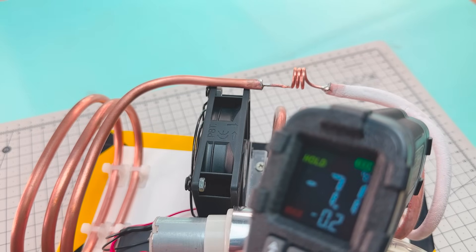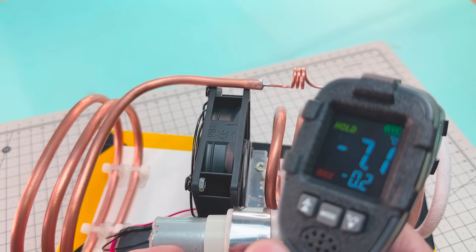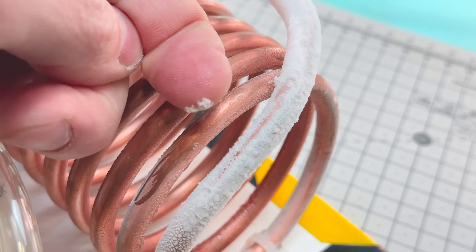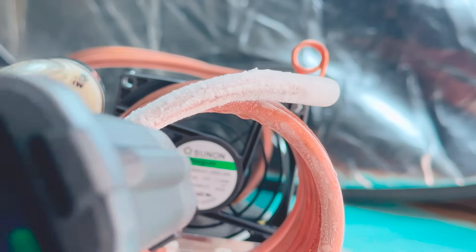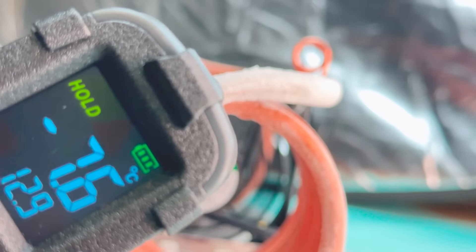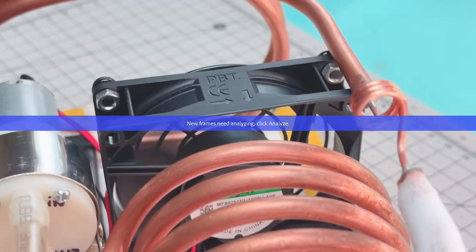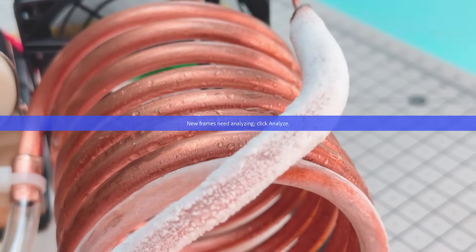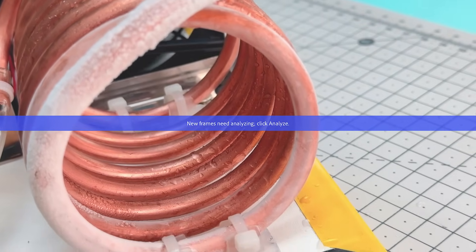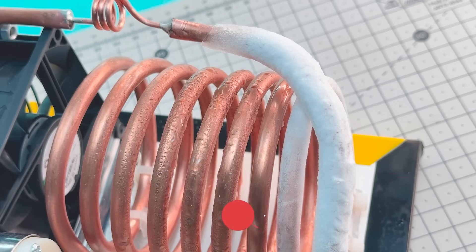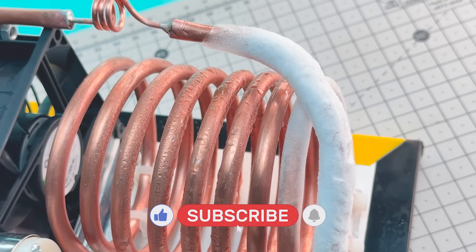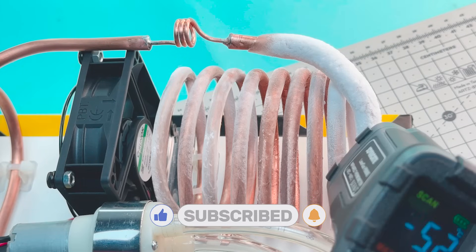In the first measurements, we get temperatures of minus 7 degrees Celsius. But if we give it some time, we'll see the tubing get colder and colder. Until finally there it is, minus 10.